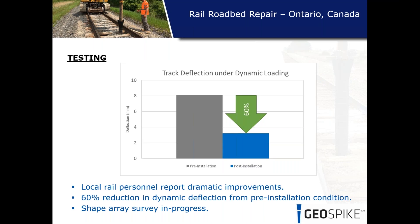On the deflection graph — with deflection on the y-axis and pre and post installation on the x-axis — a 60 percent deflection reduction was achieved after installing the GeoSpike system, meaning cumulative deflection will not accumulate as quickly. Local rail personnel, including the local superintendent, noted almost immediate improvement in what he described as the worst section of track requiring frequent repairs. Further monitoring is being undertaken by Queen's University in Ontario, with the shape array survey reinstalled and a full report currently in final review.